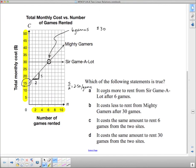Which of the following statements is true? It costs more to rent from Sir Game-A-Lot after six games. After six games, no, Sir Game-A-Lot is much cheaper after six games. So that is out of the question. It costs less to rent from Mighty Gamers after 30 games. Well, this graph tells us nothing about 30 games. It costs the same amount to rent six games from the two sites. Oh, that's just what we said here. It doesn't matter whether you're on the Mighty Gamers line or the Sir Game-A-Lot line. It costs $30 at six games. So I think that's it. It costs the same amount to rent 30 games from the two sites. No, 30 games would be way over here. So this is the one. For the two sites, it costs the same amount.